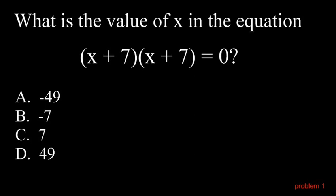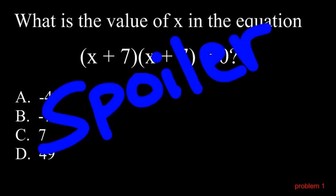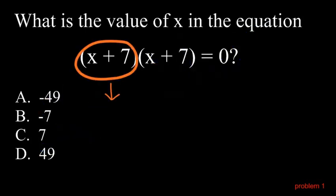Alright. This is problem one. This is for real. What is the value of x in the equation? Quantity x plus seven times quantity x plus seven equals zero. Think about that. Here's the spoiler.